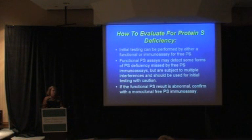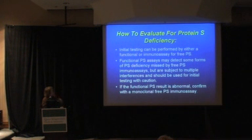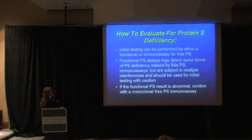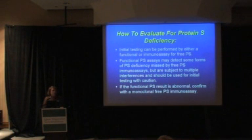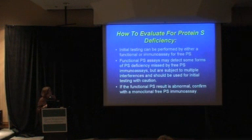If you're going to use the functional protein S assay in the lab, be prepared to explain why a low functional protein S level is low — by backing up with factor 8, factor 5 Leiden, or the free protein S assay, which is not associated with those problems. The functional protein S assays can detect some types of protein S deficiency missed by immunoassays, but they're subject to lots of different interferences. If the functional assay is abnormal, you want to confirm with a monoclonal free protein S assay.